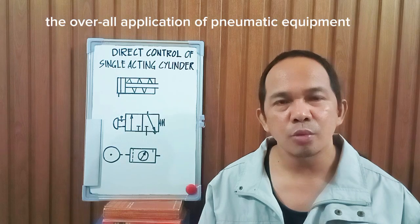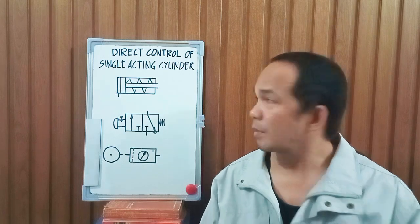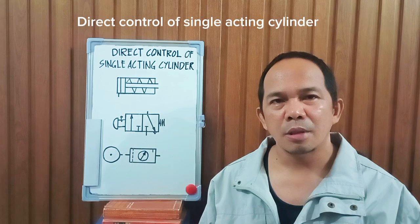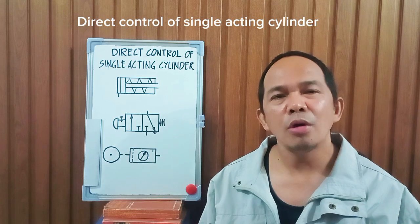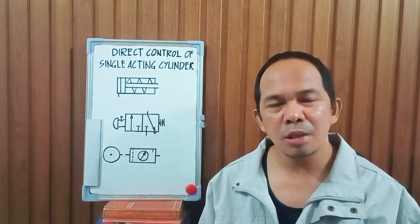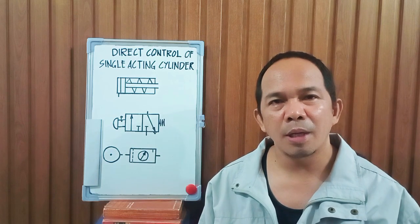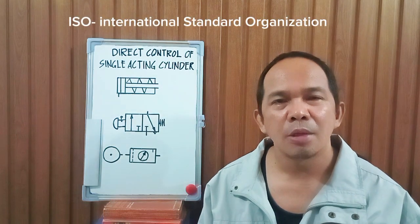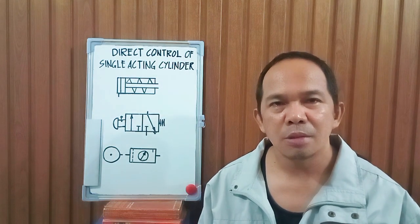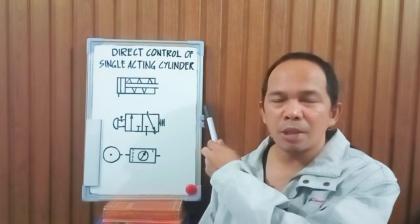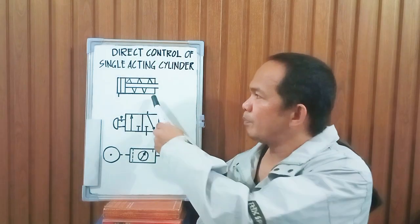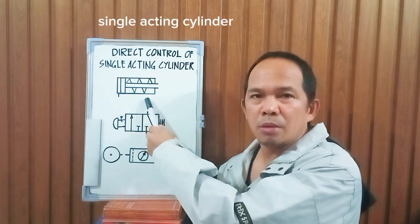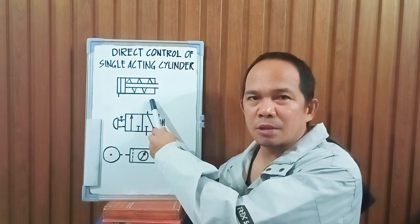Here we'll be discussing first the direct control of a single-acting cylinder. All the symbols that we're going to use here are certified by the ISO — the International Standard Organization. So in direct control of a single-acting cylinder, we have the single-acting cylinder. This is the symbol for a single-acting cylinder.